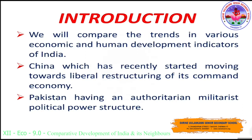In this chapter, we will compare the trends in various economic and human development indicators of India — the largest democracy of the world with a secular and liberal constitution — with its two principal neighbors: China, which has recently started moving towards a more liberal restructuring of its command economy, and Pakistan, having an authoritarian, militarist political power structure.